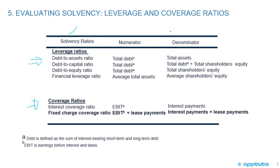We're given the numerator and the denominator. Looking at some of the leverage ratios, these should be familiar at this point. The debt-to-assets ratio: the numerator is total debt — defined as the sum of interest-bearing short-term and long-term debt. The denominator is total assets, as pretty much given in the title of the ratio.